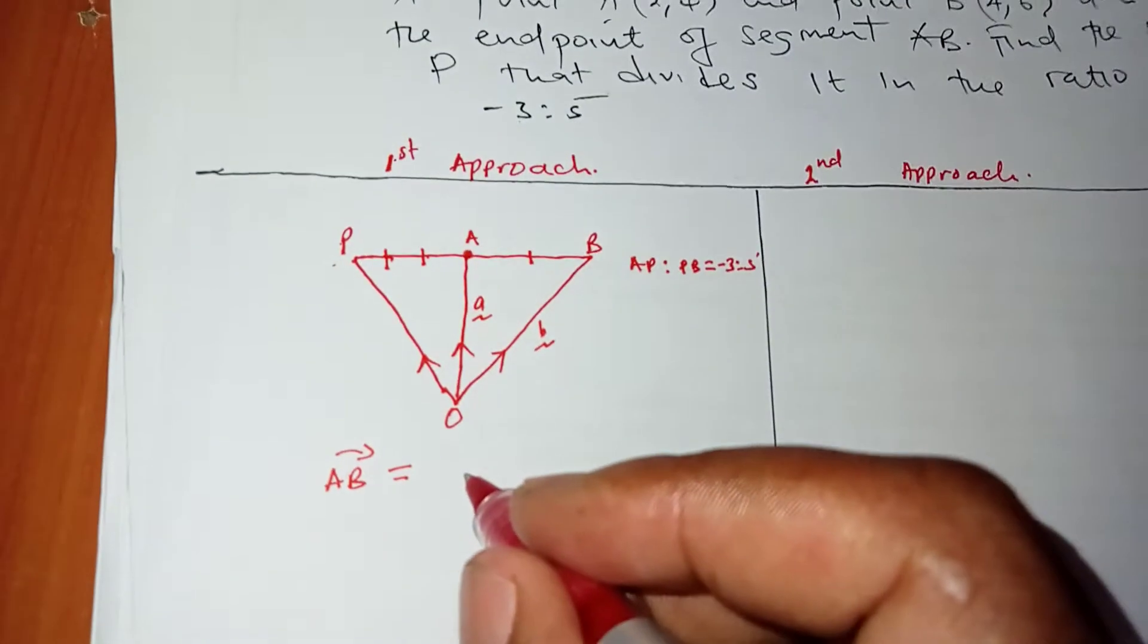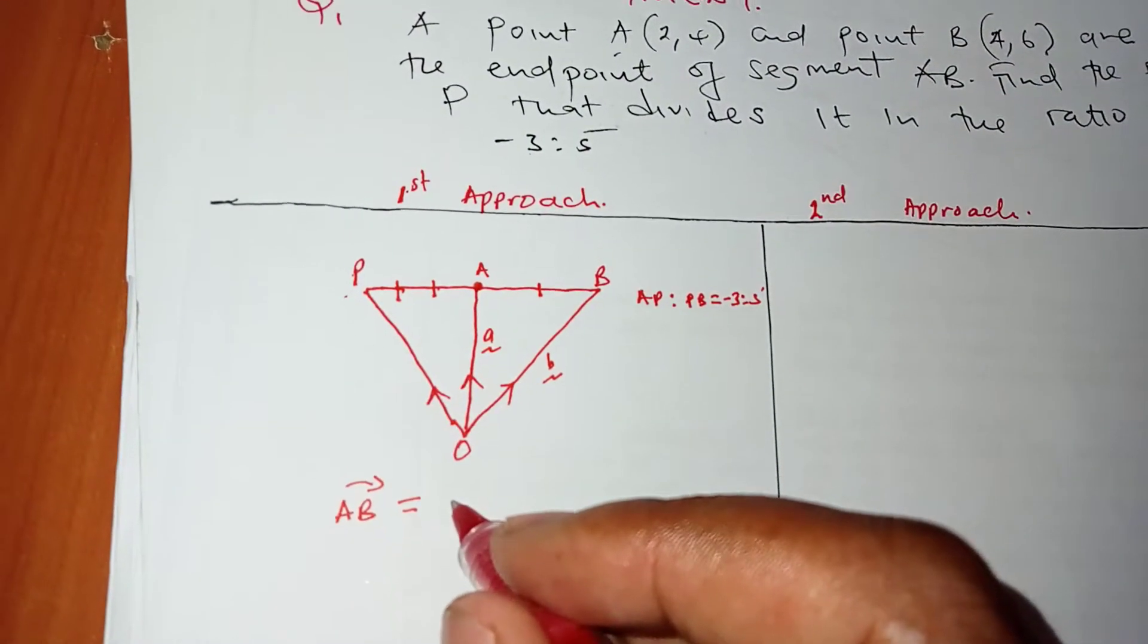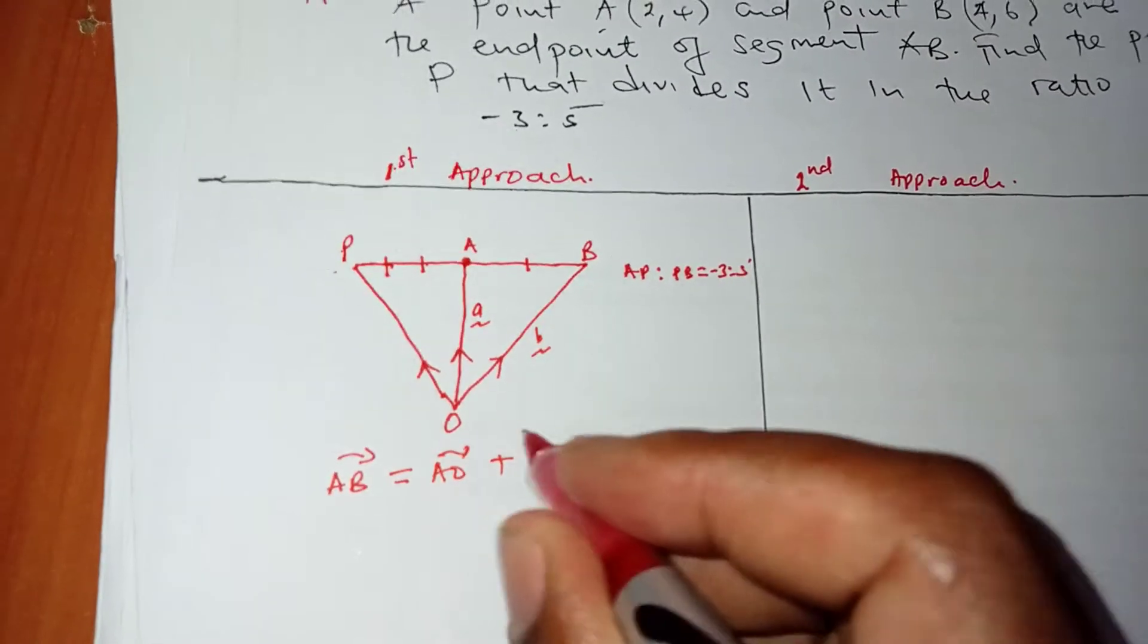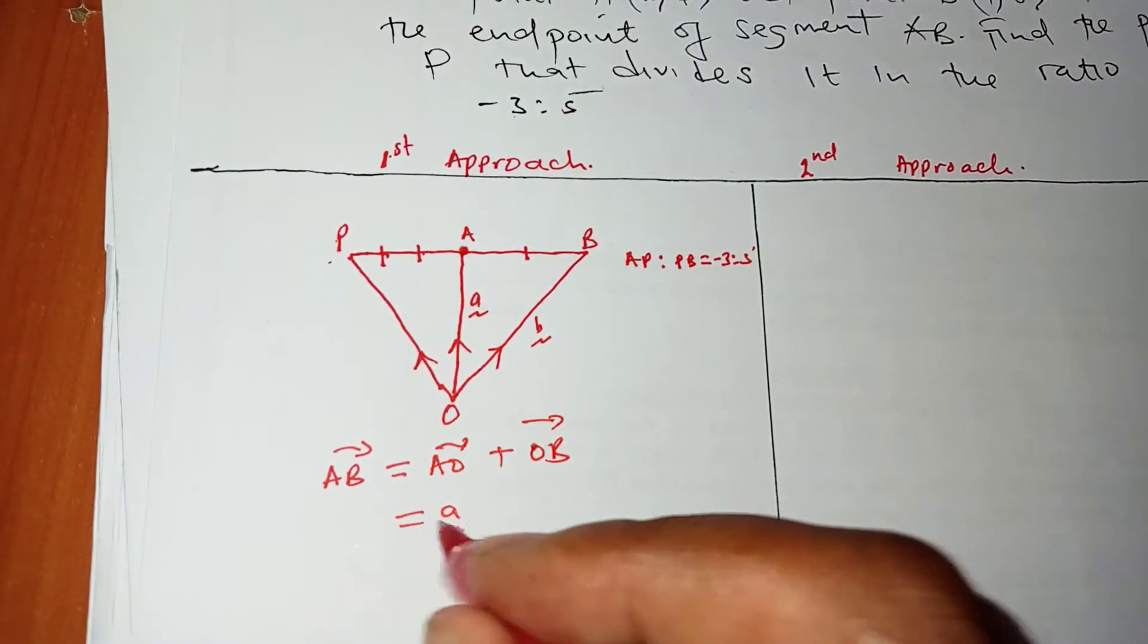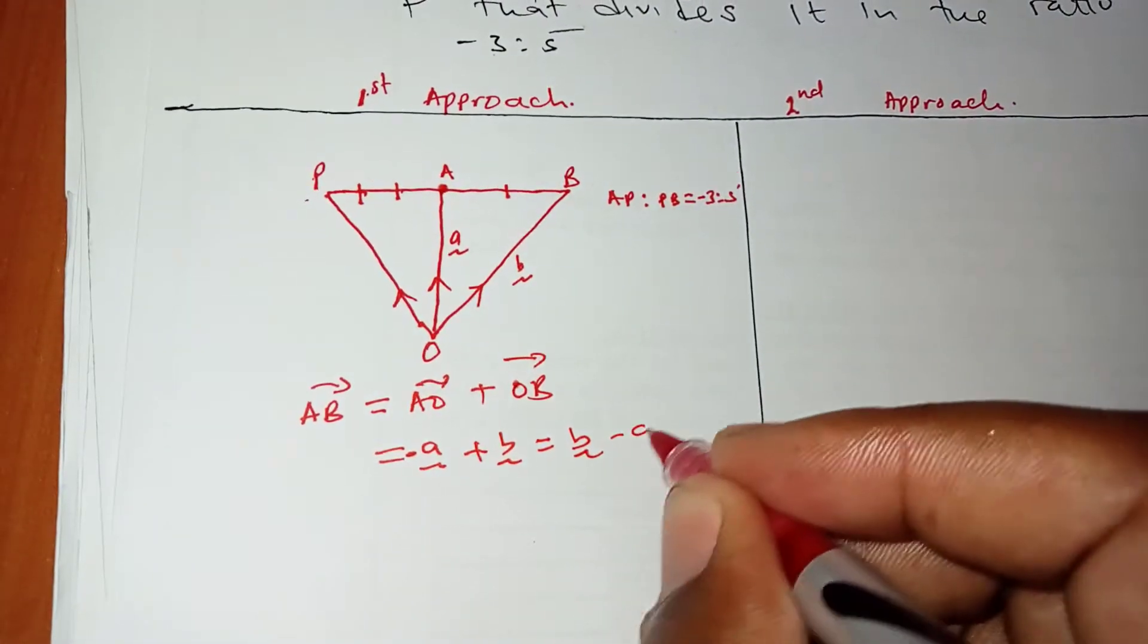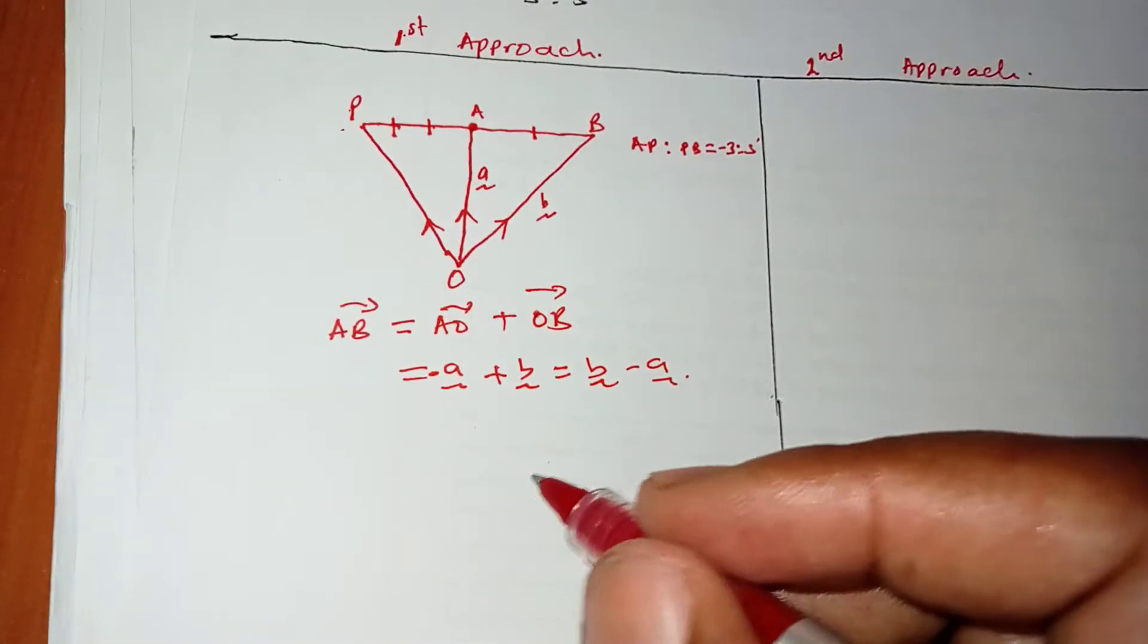So one thing we are going to do is determine the vector AB. Vector AB equals AO + OB, which is -A + B, which is B - A. That's very easy to determine.